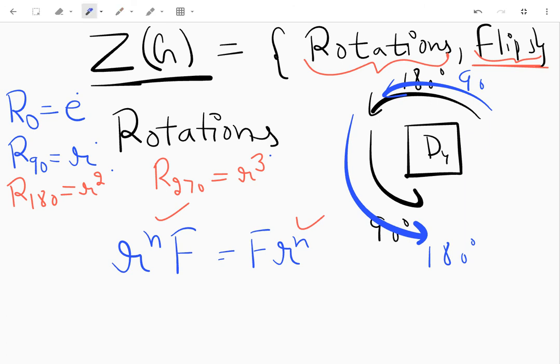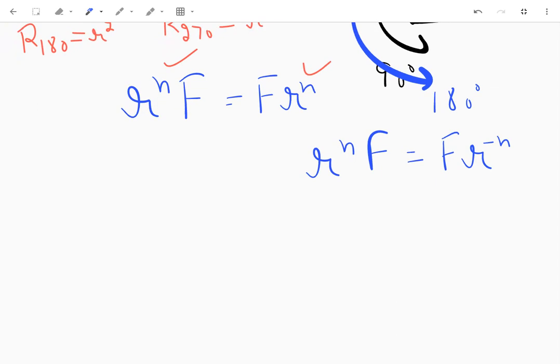Let's begin. We know that r to the power n F equals F r to the power negative n. We proved it earlier. This thing is also written as r^n s equals s r^n inverse - it's the same thing.